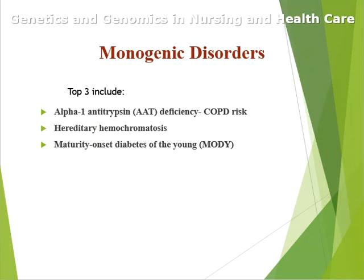Monogenic disorders are ones that come from a single gene — they're caused by single gene problems. The three that we're going to discuss are alpha-1 antitrypsin deficiency, which increases a person's COPD risk; hereditary hemochromatosis; and maturity-onset diabetes of the young, or MODY.